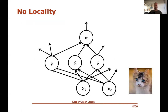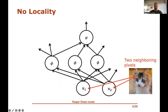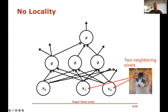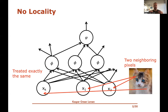One issue with this architecture for image recognition is that there's no sense of locality between pixels. Two neighboring pixels feed into every neuron in the next layer the same way as a pixel far away in the lower right corner — the network doesn't distinguish at all whether two pixels are close or far apart. It's not exploiting any sense of locality, which we believe is important when looking at an image.